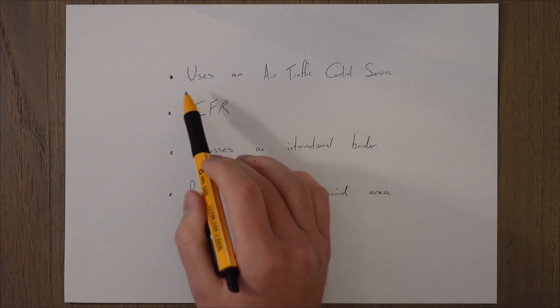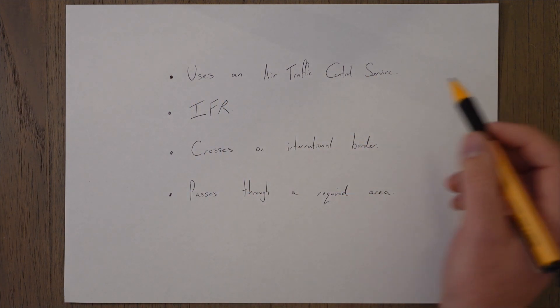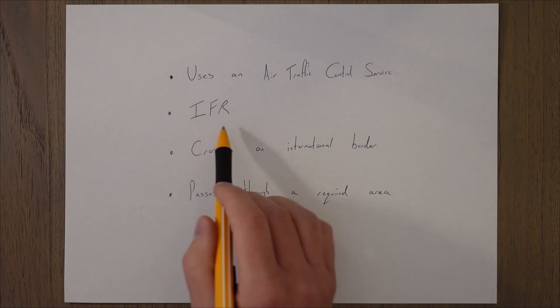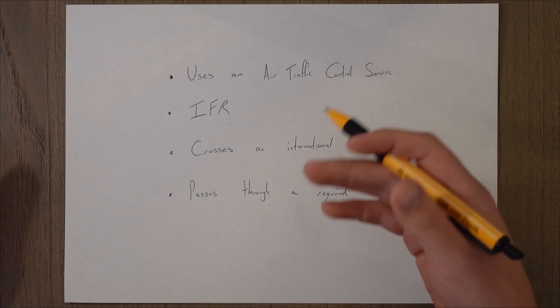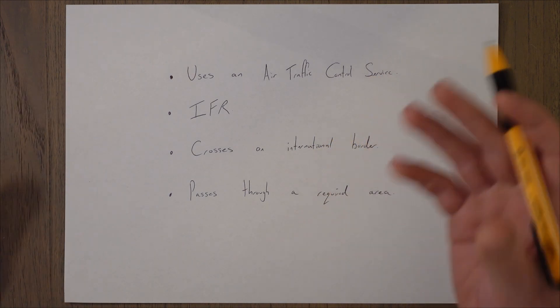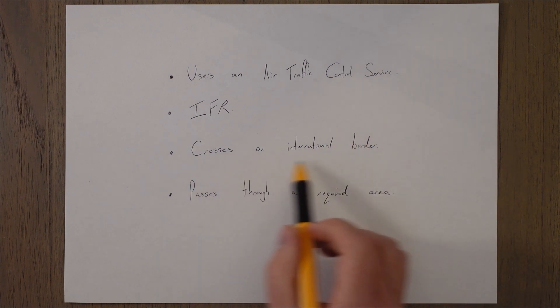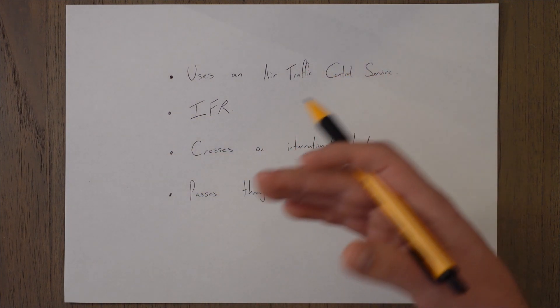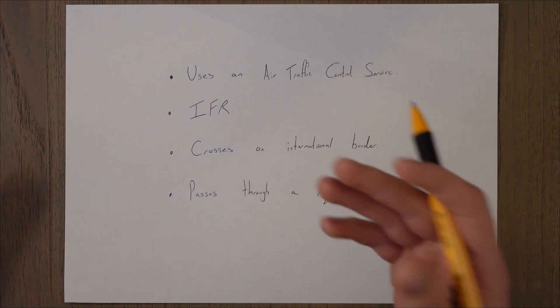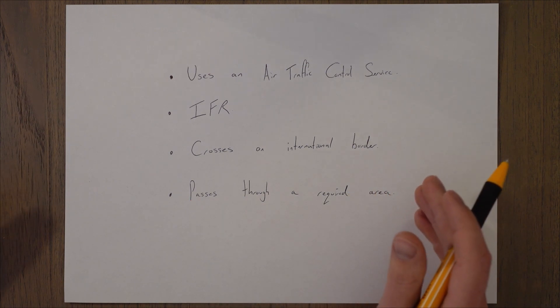If any part of the flight is going to use an air traffic control service, you've got to use a flight plan. If it is an IFR flight or if the flight takes place in advisory airspace. If the flight crosses any international borders, so if you're going from France into Germany or something like that you will have to do a flight plan.